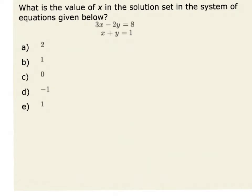That means we are looking for the x and y values that satisfy both equations at the same time. There are a couple ways that we can solve systems of linear equations. We could graph them and find their intersection point.